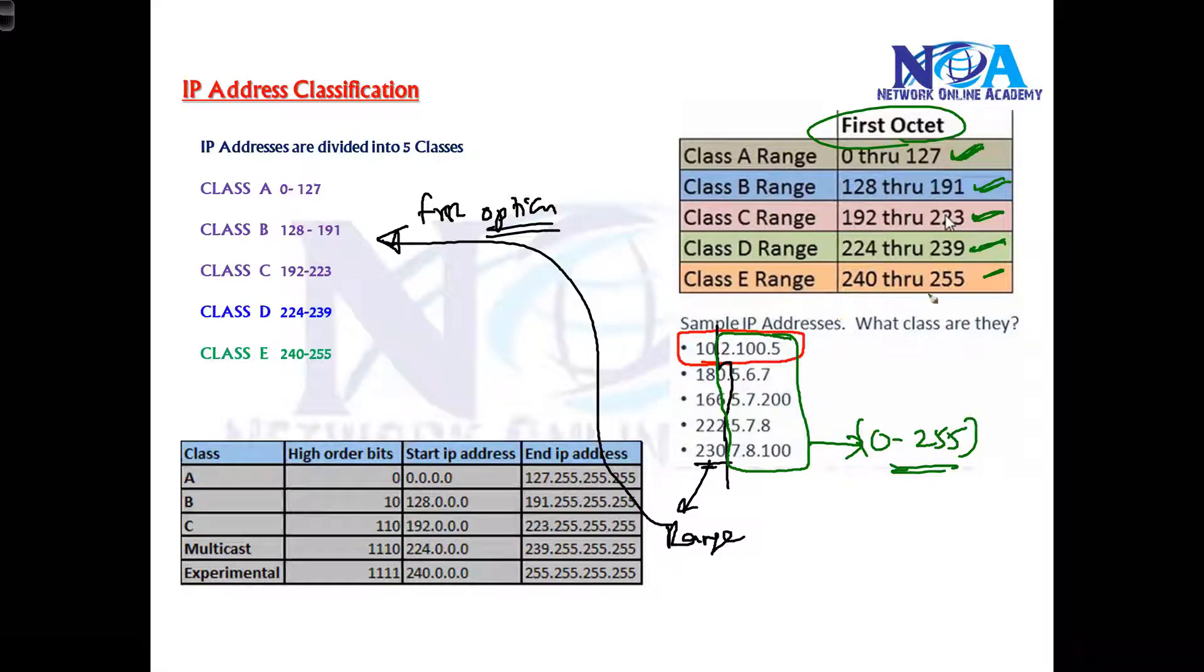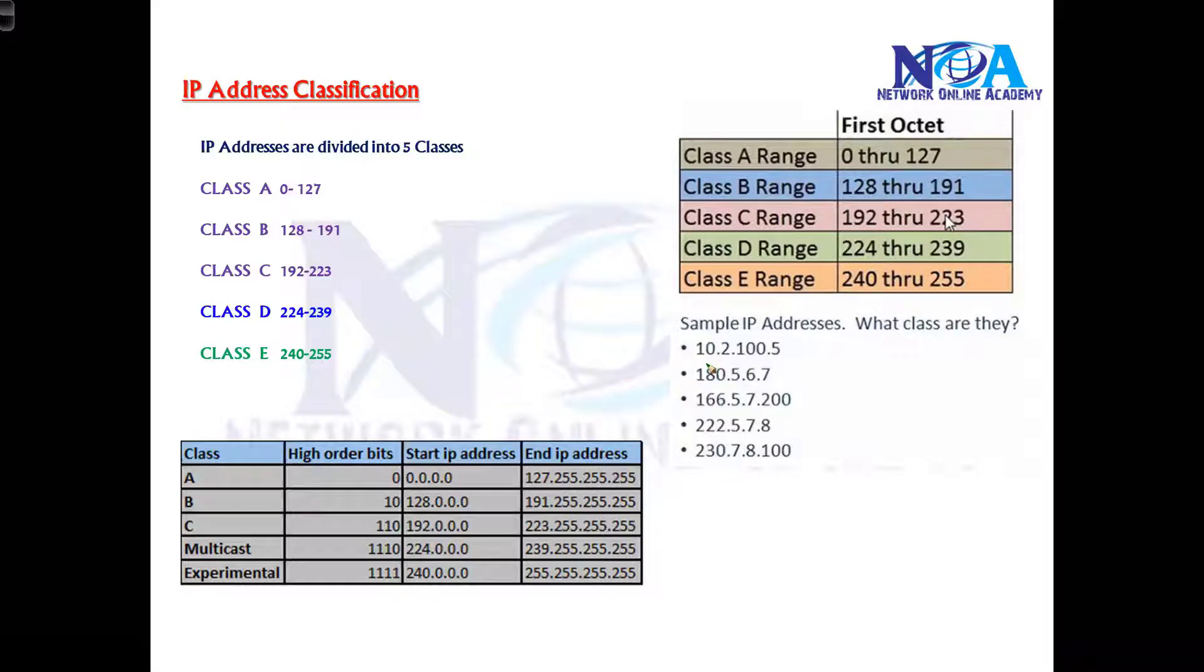If I go with the first example here, the first portion is 10, so 10 comes in the range of A class. So I'll say this is my A class address.